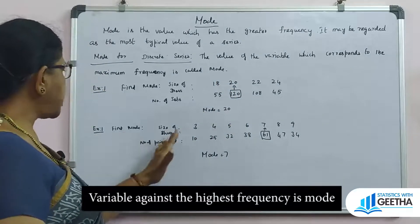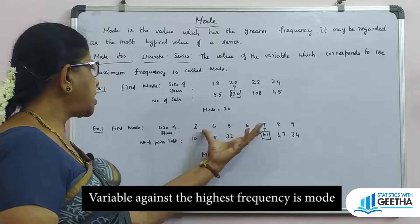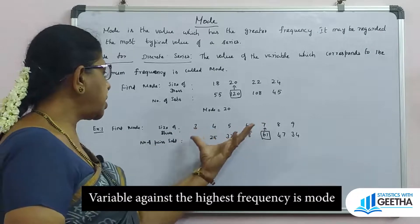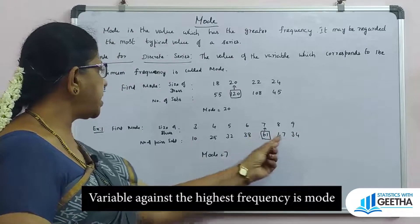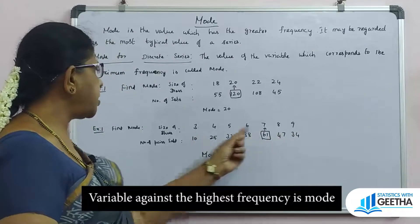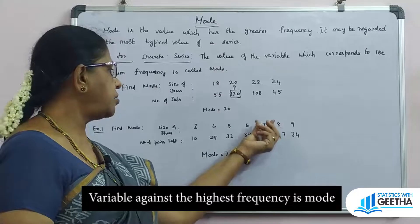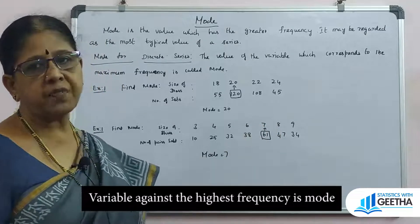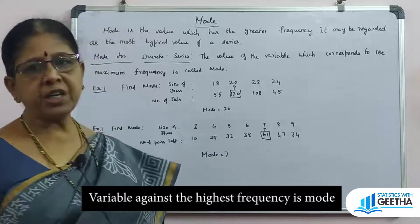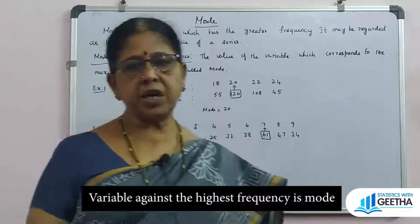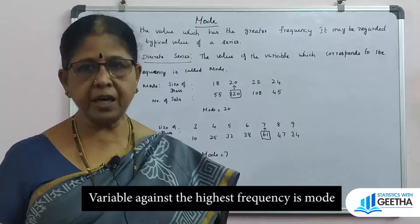In the second example, we have size of shoes and number of pairs sold. The highest frequency is 61, and the corresponding variable value is 7. So mode is equal to 7. This shows how mode is useful in practical life — for example, to determine which size of dress or shoes to manufacture more of.